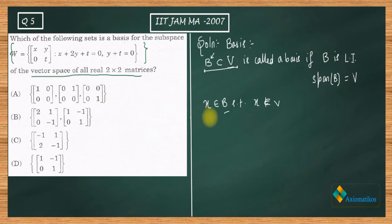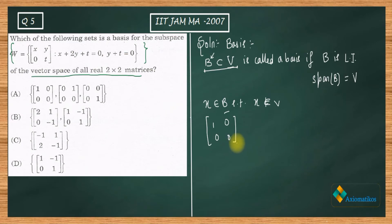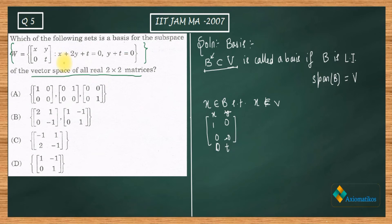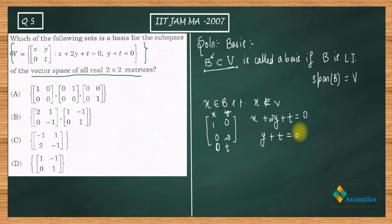In Option A, you have the element [1,0;0,0]. If this option is true, this element is inside the basis of vector space W, for which we have to find the basis. According to the terminology, the entries are x, y, 0, and t. According to the definition of W, the element inside W must satisfy two properties: x + 2y + t = 0, as well as y + t = 0.